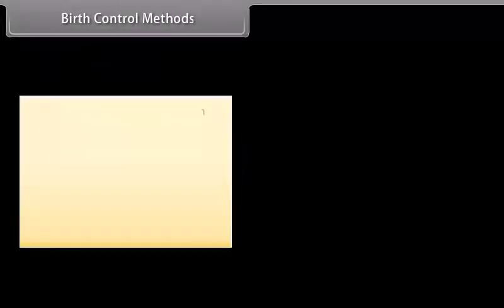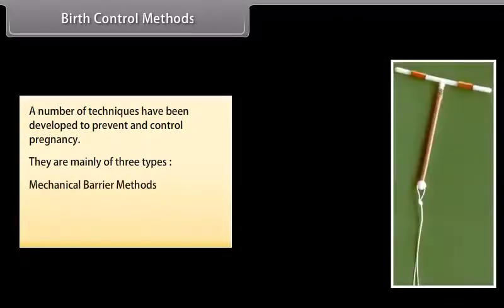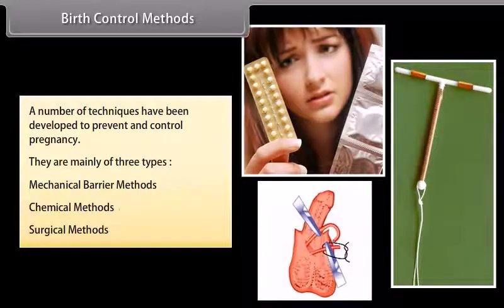Birth control methods: A number of techniques have been developed to prevent and control pregnancy. They are mainly of three types: mechanical barrier methods, chemical methods, and surgical methods.